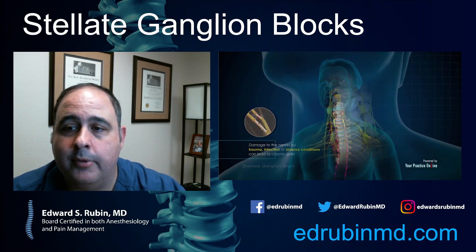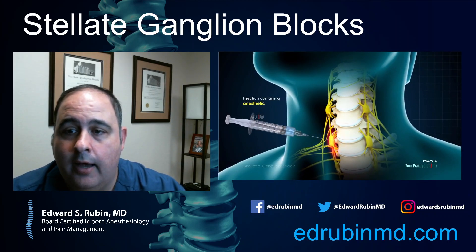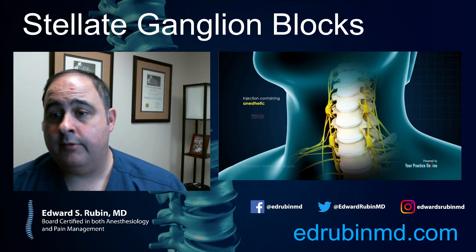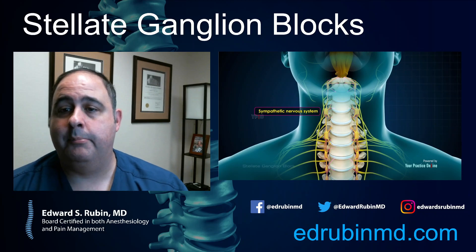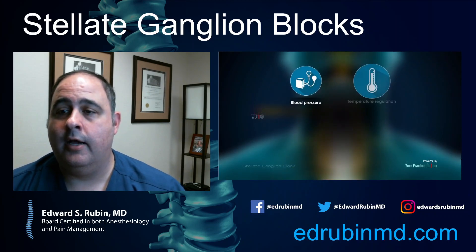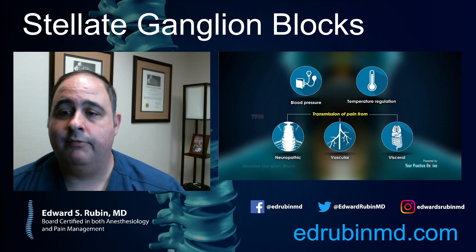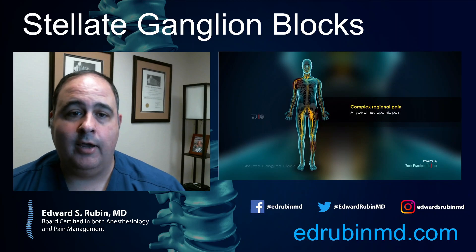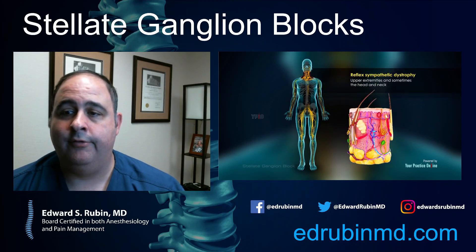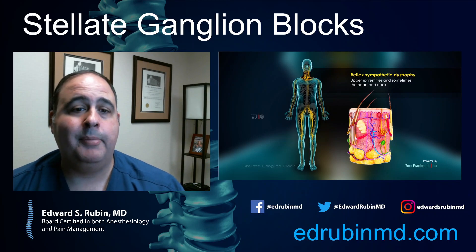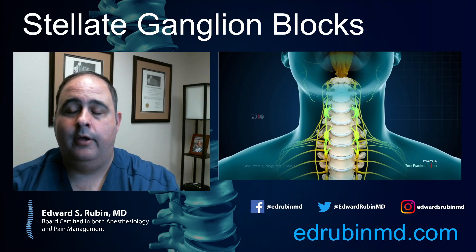Typically we'd be doing this for somebody with complex regional pain syndrome. I've had a few cases of patients with PTSD and some other diagnoses which have responded, but the main indication here is abnormalities of the sympathetic nervous system. In the case of irritation of the sympathetic nervous system, you could see color changes, temperature changes, and hypersensitivity to light touch — these are all symptoms of complex regional pain syndrome. By the time people get to a pain specialist, they've often already been given this diagnosis.